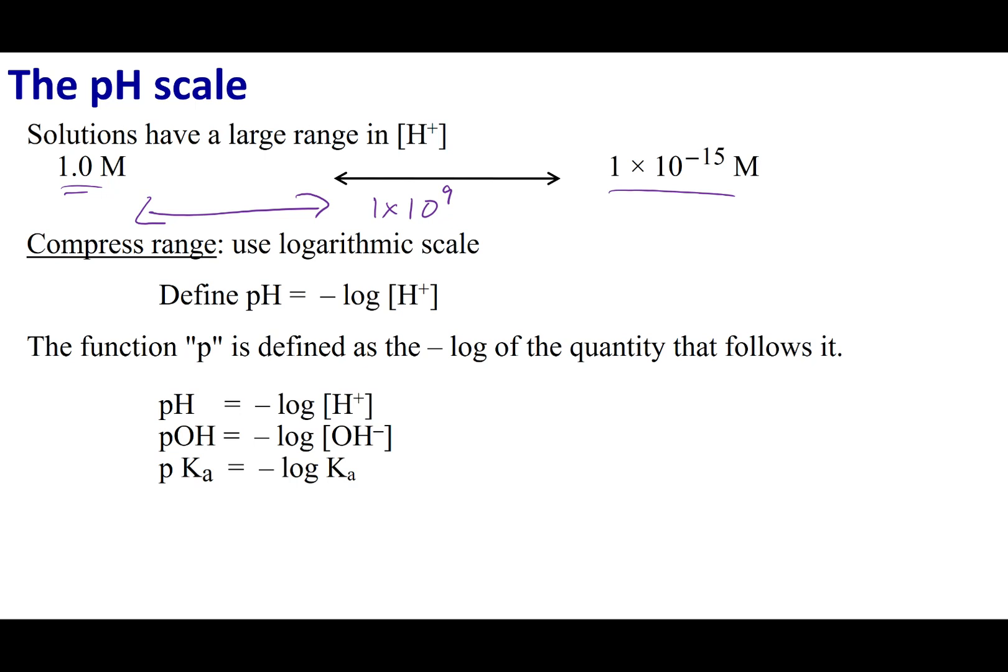And so to help us manage such a vast scale or large scale, we're going to use a logarithmic scale or a p scale. So what we have is something called the pH. The pH means I'm going to take the negative log of my H plus. Now p just means take the power of. So if I have pH, it's the negative log of H plus.